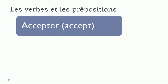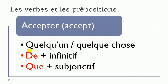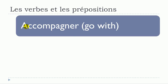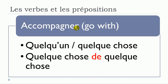The first verb we'll see is accepter. You can see here the three constructions possible: accepter quelqu'un, accepter quelque chose, then accepter de plus verbe à l'infinitif, and accepter que plus verbe au subjonctif.